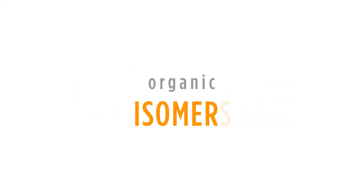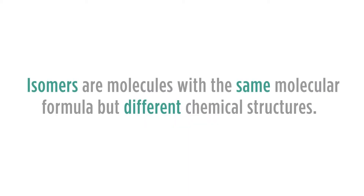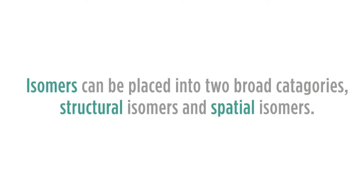In this video, we'll look at organic isomers. Isomers are molecules with the same molecular formula but different chemical structures. Isomers can be placed in two broad categories: structural isomers, where the connections between the atoms has changed, and spatial isomers, where the connections between the atoms are the same but they are different in spatial space.